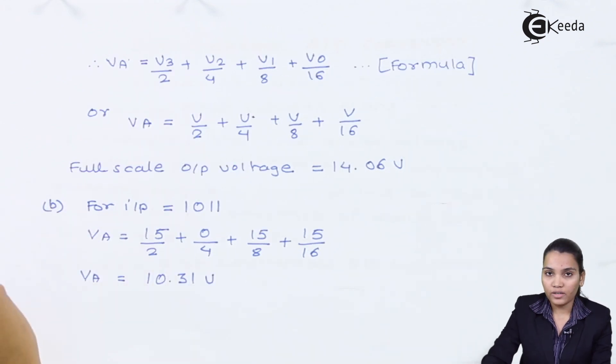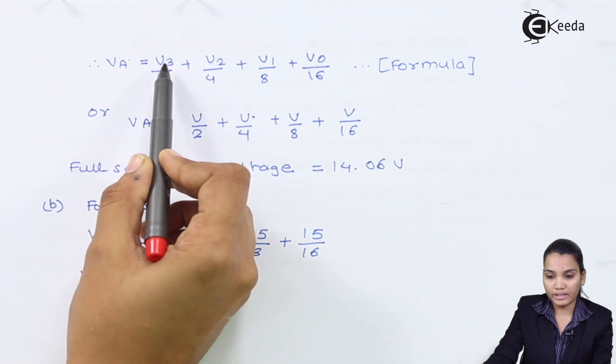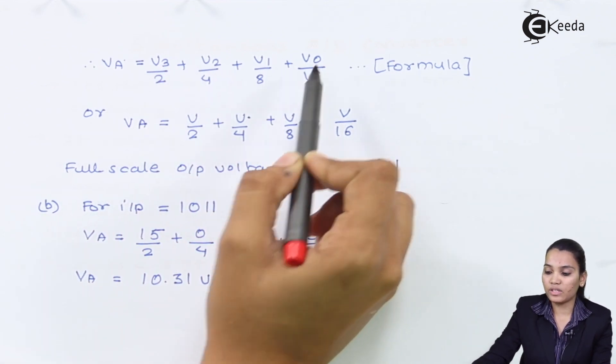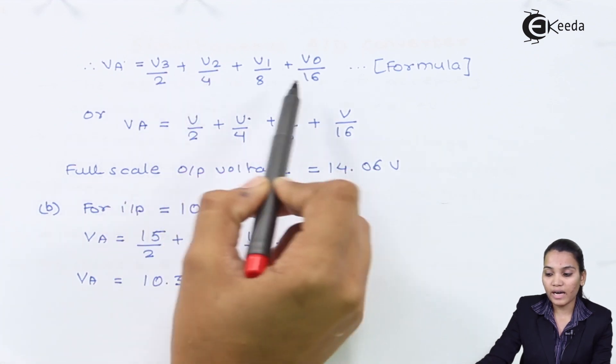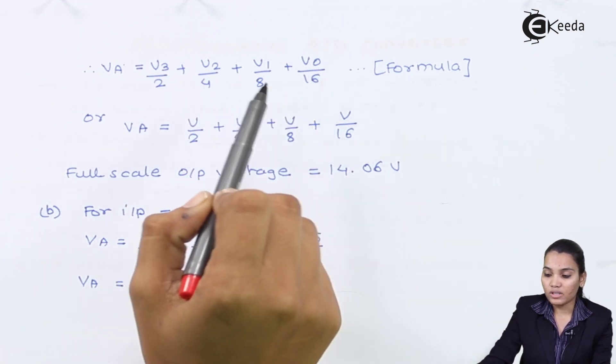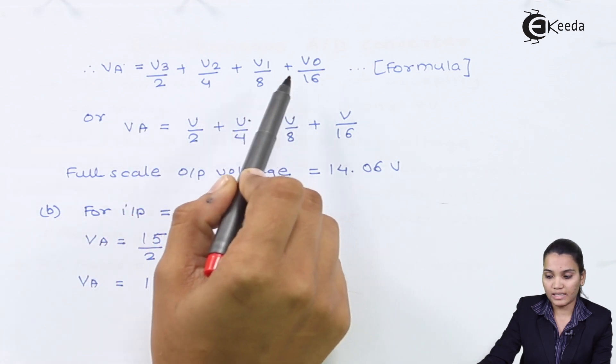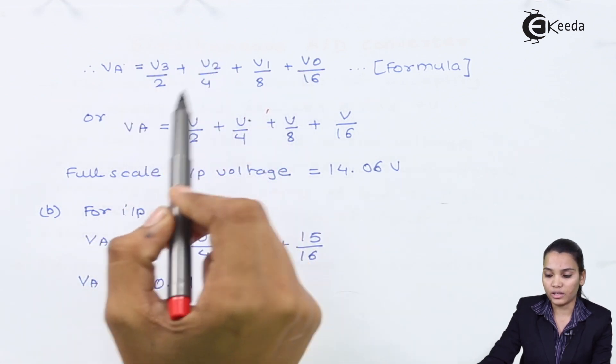So we all know that for calculating the output voltage, the formula will be V3/2 + V2/4 + V1/8 + V0/16. Now why we have taken up to 16? Because this is a 4-bit ladder network. That's why we have taken up to the 4th term, that is from V0 up to V3.